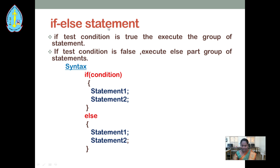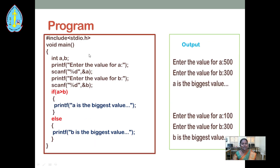We can use this if-else statement when we want to check whether a condition is true or not. Here I have given one simple example program with #include stdio.h and void main function. Within the main function, I have declared two variables a and b as the integer data type. Using the scanf function, I get the values for a and b from the user. Here, I am checking if a is greater than b — if so, it will print 'a is the biggest value'; otherwise it will print 'b is the biggest value'.